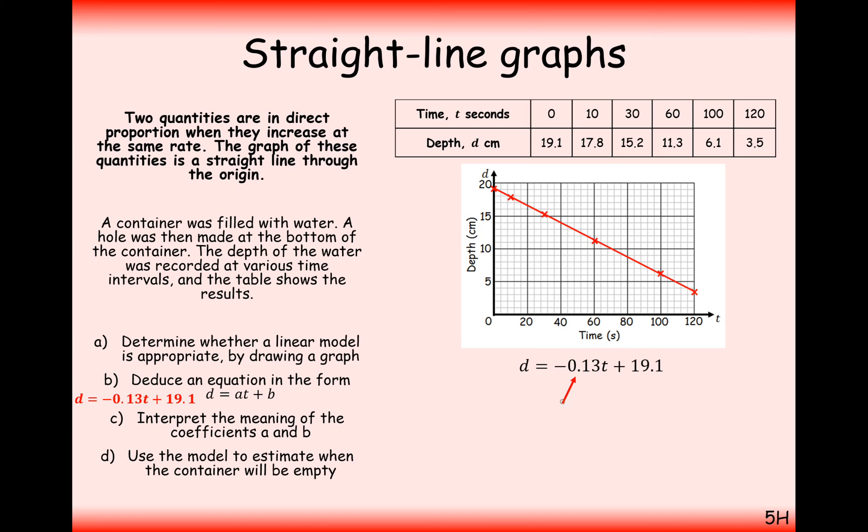Well, in this case here, a is the gradient. So, therefore, that means for every one second that transpires in time, the depth of the water is going to reduce by 0.13 centimetres. Make sure you go back to the units as well when you're interpreting these questions here.